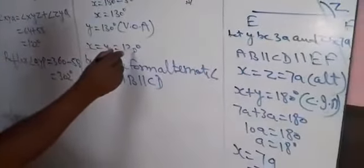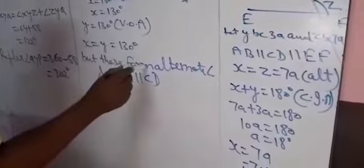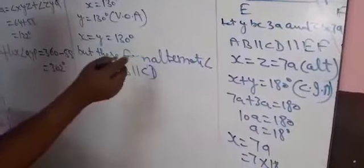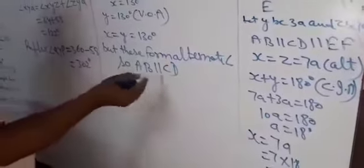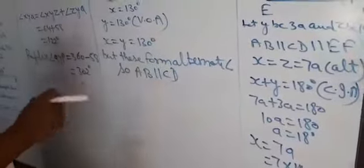Since X and Y are equal, X equals Y equals 130 degrees, and they form a Z-shape, which means they are alternate angles. Therefore AB is parallel to CD, because X equals Y and they form the alternate angle Z-shape. Now let's move to portion number 2.